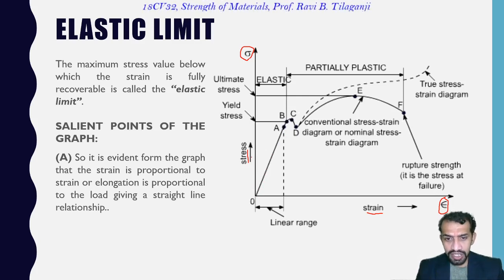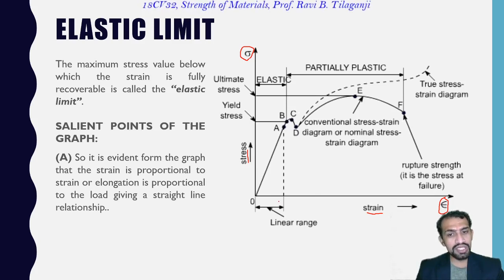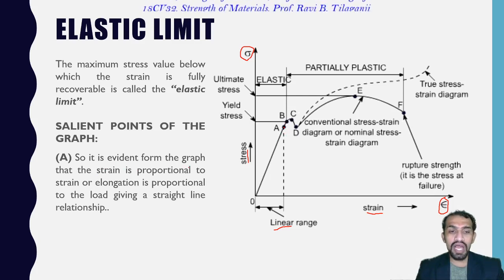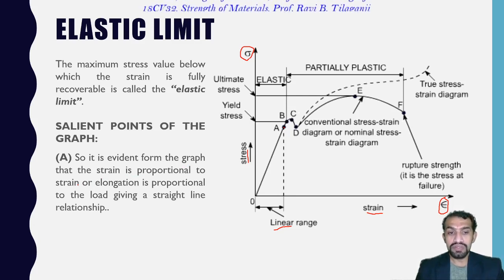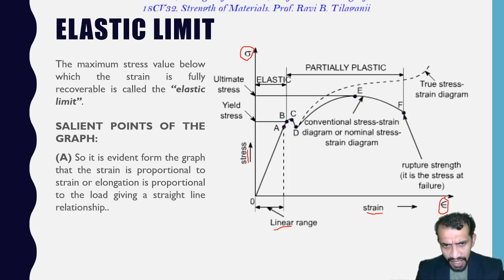Stress is increasing, meaning load-taking capacity is increasing, and similarly there is a small increase in deformation. This small increase in deformation is called the linear range, which goes up to point A only. It is evident from the graph that strain is proportional to stress — that is, elongation is proportional to load — giving a straight-line relationship up to point A.